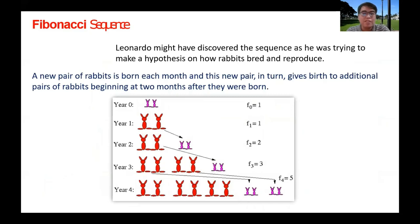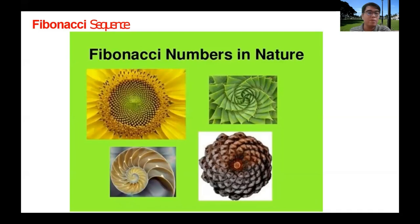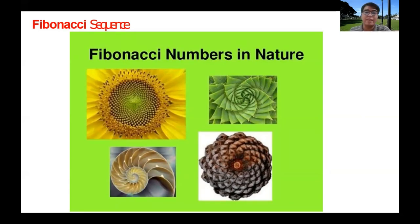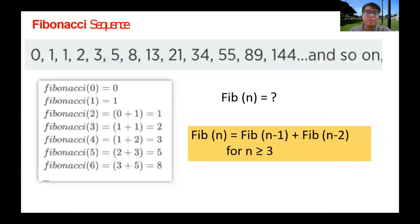Fibonacci may have discovered the sequence while hypothesizing about how rabbits breed and reproduce. A new pair of rabbits is born each month, and each new pair in turn gives birth to additional pairs beginning two months after they were born. So F0 is 1, F1 is 1, F2 is 2, F3 is 3, F4 is 5, and so on. There are also many examples of Fibonacci numbers in nature — the sunflower, the shell of the snail, pine cones, and certain cacti produce Fibonacci numbers in the patterns of their seeds or shells.